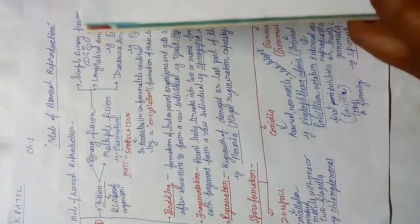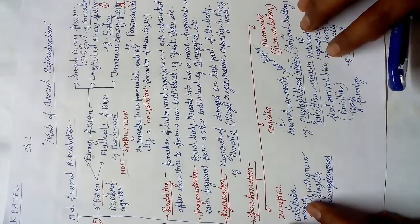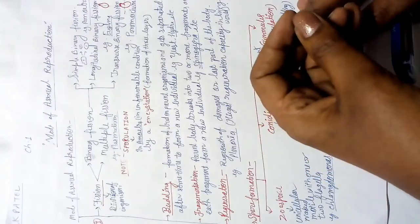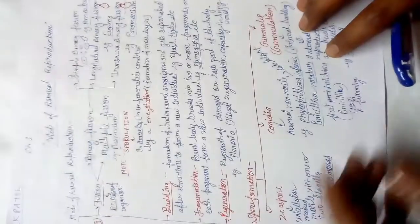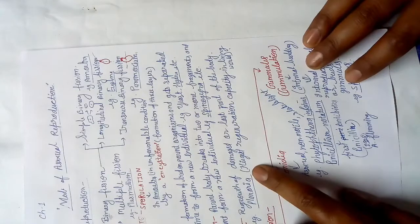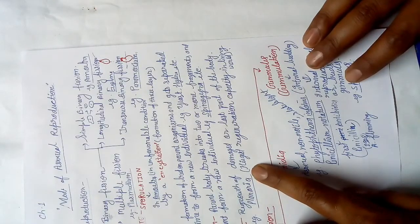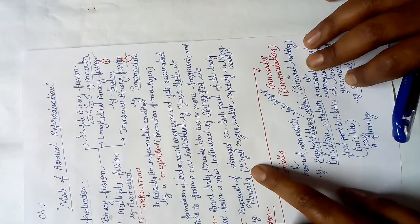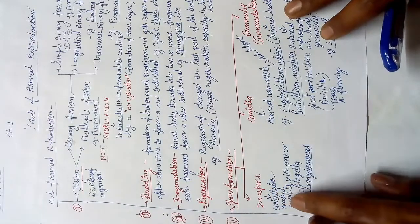Next is regeneration. Regeneration means regrowth of a damaged or lost part of the body. The example is Planaria, which has the highest regeneration capacity in the living world. In human beings, two organs have regeneration capacity: the liver and the kidney.